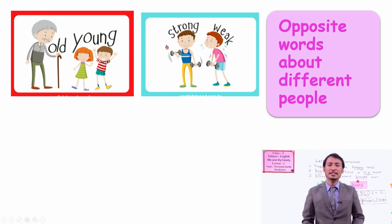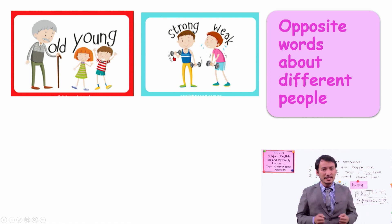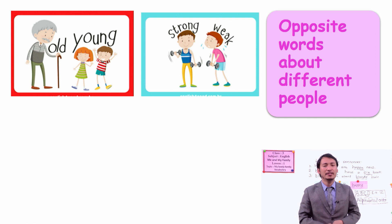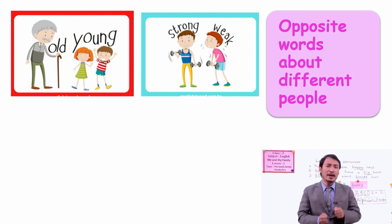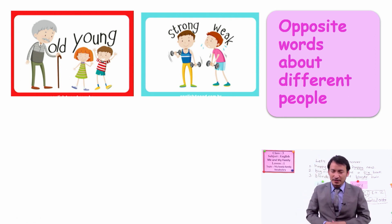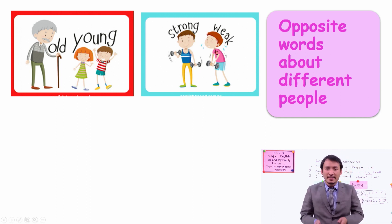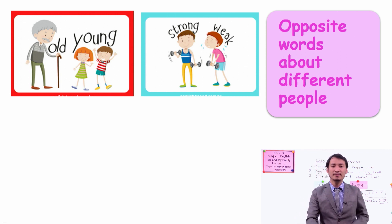Another word is strong and weak. Strong means — you can look at this picture — a strong person can lift up things easily. And weak — when you have a thin body and no exercise, no good food, then you are weak and you cannot lift things.